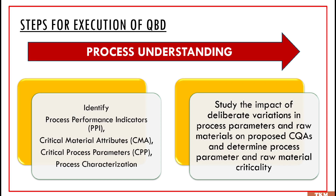Now we come to the process understanding steps. In order to understand the process, we need to identify process performance indicators, critical material attributes, critical process parameters, and process characterization. This helps to study the impact of any variations in process parameters or raw materials on proposed CQAs. We can determine the process parameter and raw material criticality, so in case of any variations, we can determine the critical process parameters or critical raw materials. These indicators help us to determine the critical process parameters, and only then can we truly understand the process.